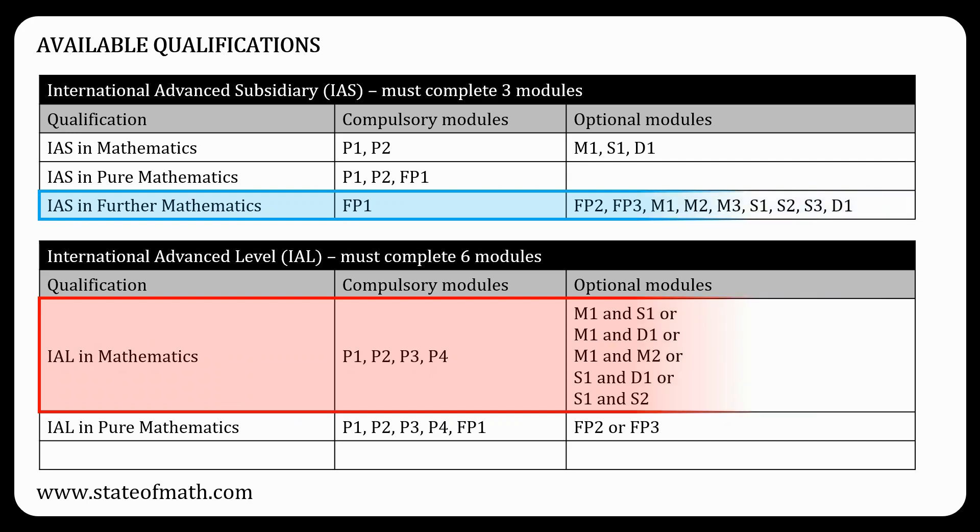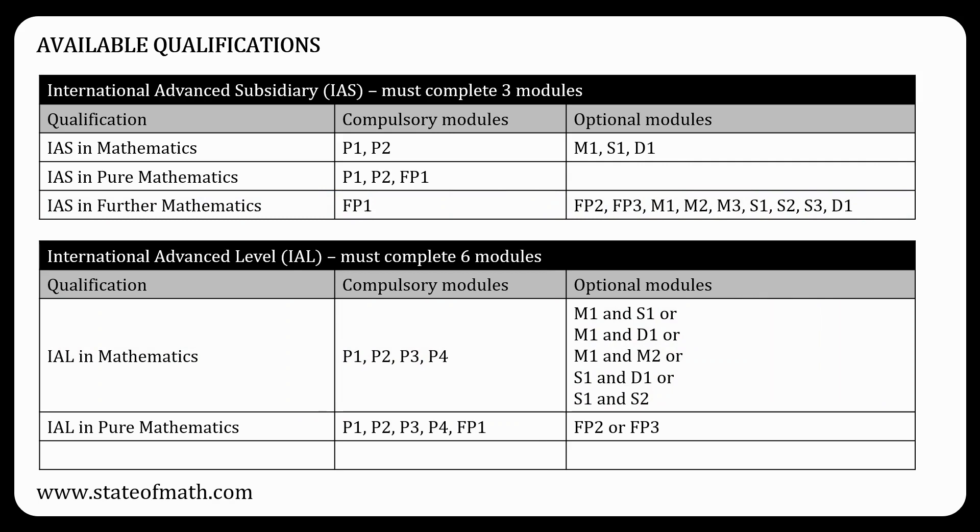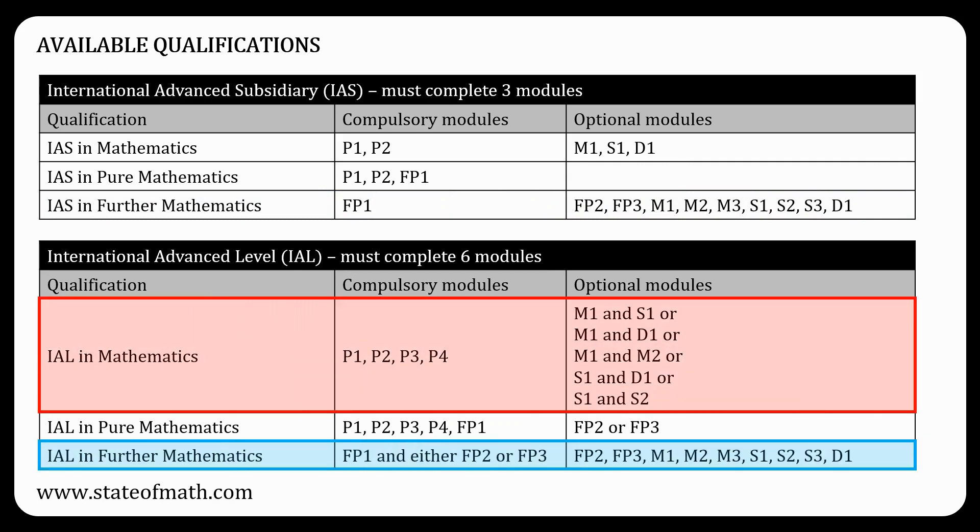Similarly, if you decide to go for two A-levels, you will need to do a total of 12 modules and get the IAL in mathematics and the IAL in further mathematics. Again, no module can be used in more than one qualification.